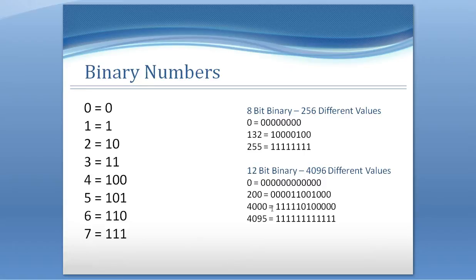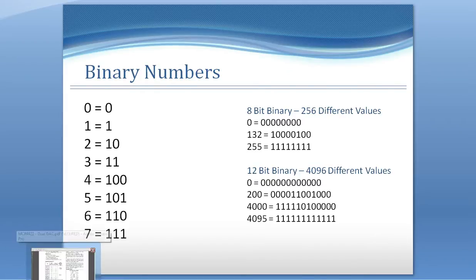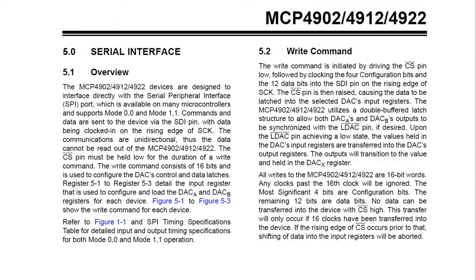If we send the DAC 4095 — the maximum — it sees that as 100% and outputs 100% of its voltage reference, which in this case is 2.048 volts. If we send 2048 it sees that as 50% of the maximum and outputs 1.024 volts. The reason I've used a voltage reference of 2.048 volts is that if I send the DAC a value of 1 it will output half a millivolt, send 2 and it outputs 1 millivolt, increasing in half-millivolt steps all the way up to 2.048 volts — making it very easy to work out values.